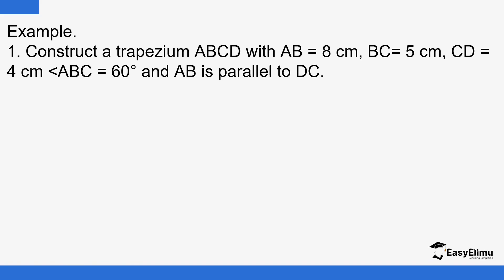Here we are given information to construct trapezium ABCD, a four-sided figure. Line AB is 8 centimeters, BC is 5 centimeters, CD is 4 centimeters, and angle ABC is 60 degrees. There must be exactly one pair of parallel sides, so take note of that. The best option is to sketch first.